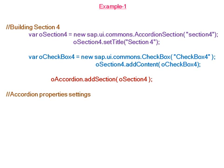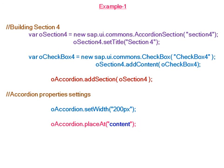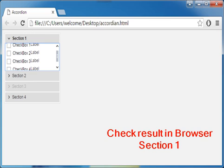For accordion property settings, we set the width to 200 pixels, and the accordion is attached to the div element — the user interface area. Checking the result in the browser: in section one, you can see checkboxes one, two, three, and four along with a label.